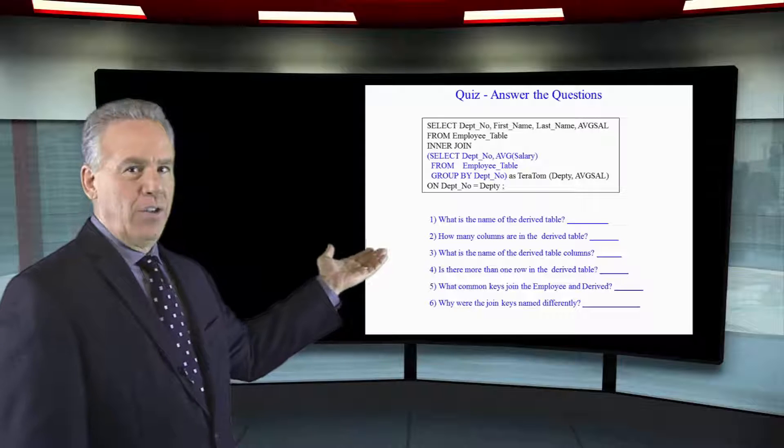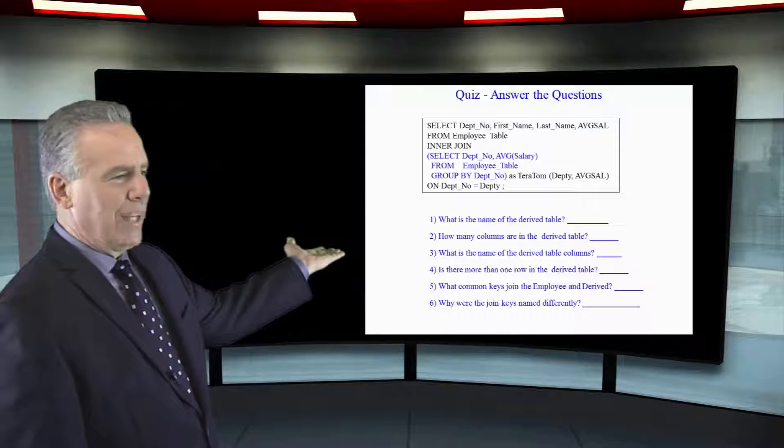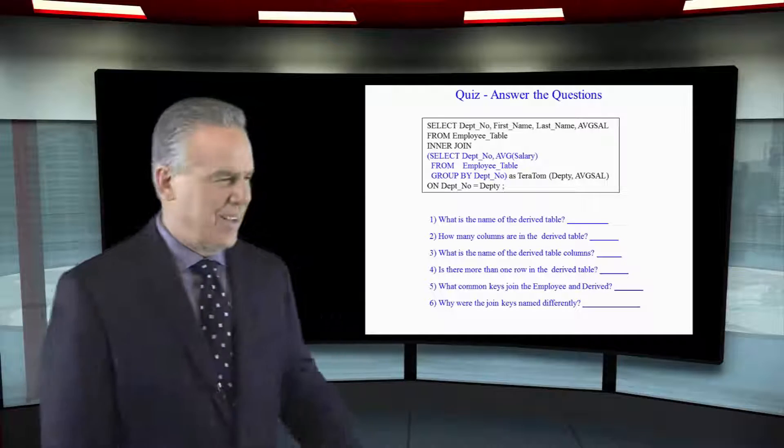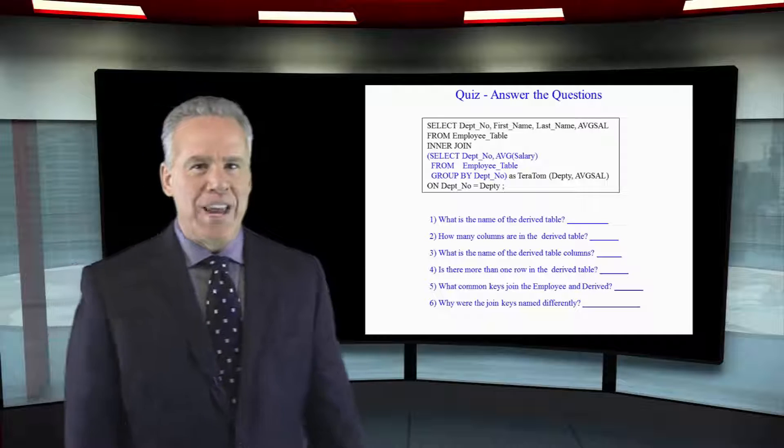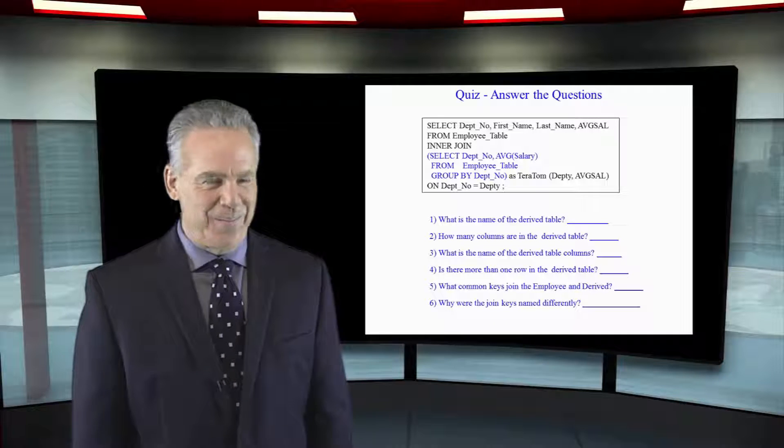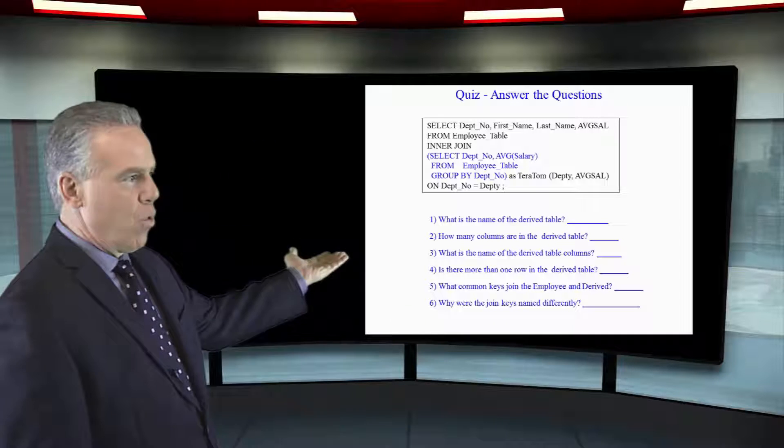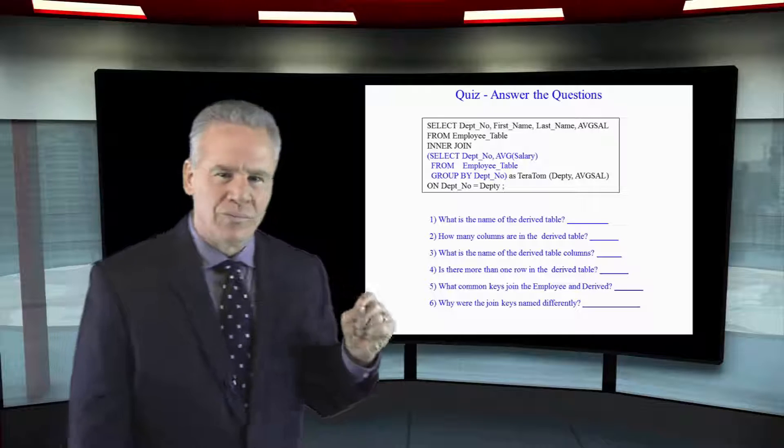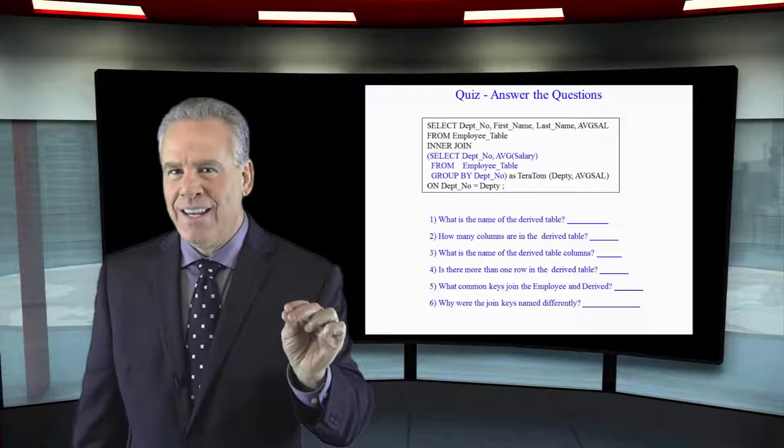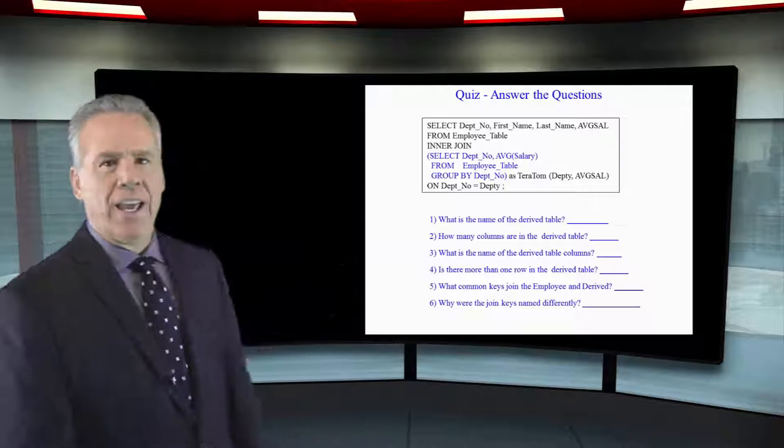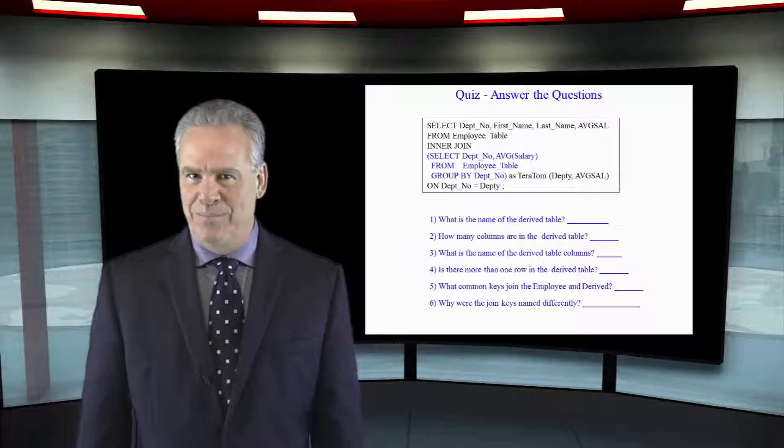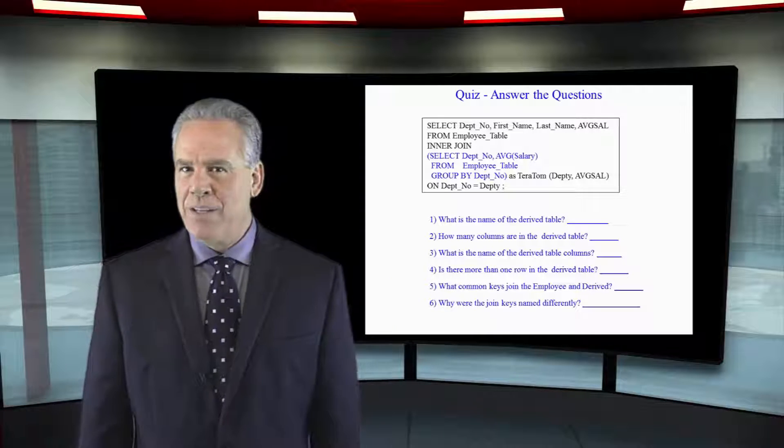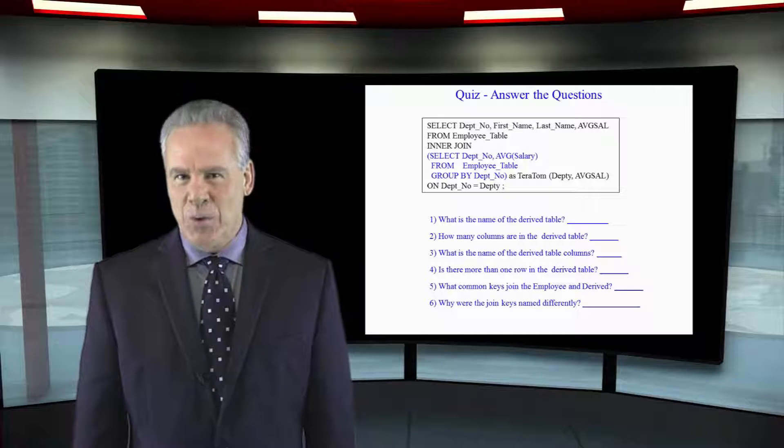What is the name of the derived table? How many columns are in the derived table? What is the name of the derived table columns? Is there more than one row in the derived table? What are the common keys that join the employee and the derived table? And why were the joined keys named differently? Good luck.